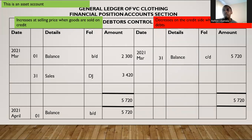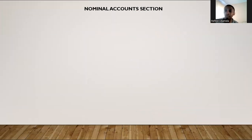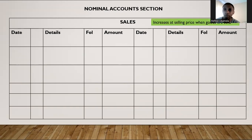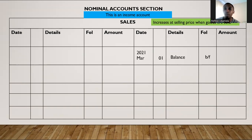Now we go to the nominal accounts section, which includes sales. Sales represents everything we have sold — whether for cash or on credit. Sales is an income account, so it increases on the credit side at selling price. On the credit side we will have balance brought forward from the previous month of $10,600. Sales will increase on the credit side by goods sold on credit.